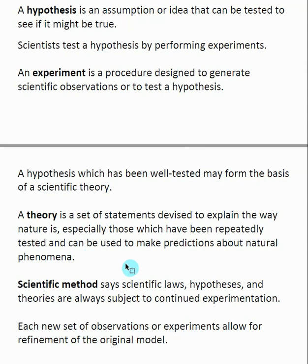For example, based on some of Einstein's theories, scientists were able to predict that there would be gravity waves, and fairly recently they were actually able to prove that. So a theory allows you to make predictions, and if the theory is sound, those predictions should be proven true — and how you prove it is by running experiments.